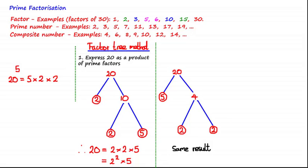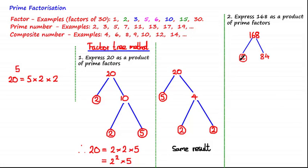Let's have a look at one more example. Express 168 as a product of prime factors. So using the factor tree method, we start with 168. As 168 is an even number, it's quite easy to split this into a product of factors. 2 times 84 is 168. 2 has been circled as it's a prime number. Finding 2 factors which multiply to give 84, we can use 7 and 12.